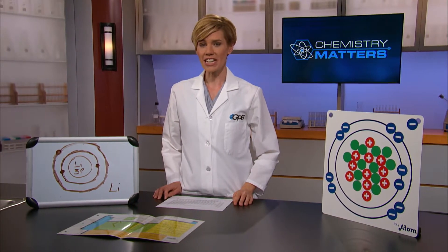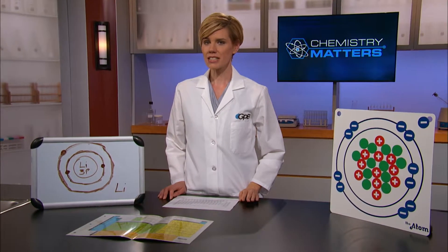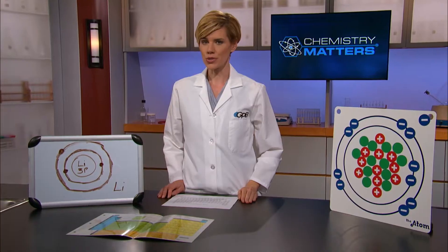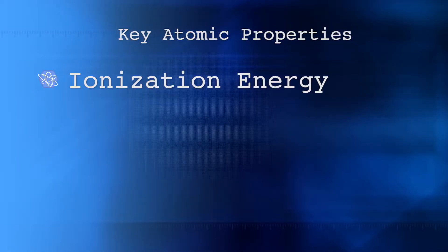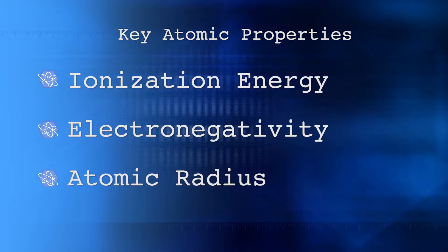Now that you've been introduced to the idea of effective nuclear charge, this is a good place to introduce three atomic properties that are of interest to chemists: ionization energy, electronegativity, and atomic radius. Soon we'll look for periodic trends for each of these atomic properties.